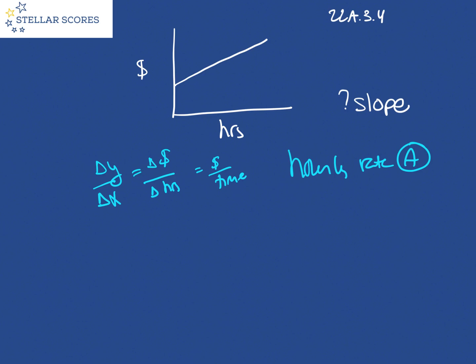Looking at the other answer choices, B is the one-time fee. The one-time fee, the $50 fee to come out and look at your cabinet or whatever, that's going to be here. The one-time fee is captured here because at zero hours, I'm already charging you $50 before I've even started the job. So it's not B.